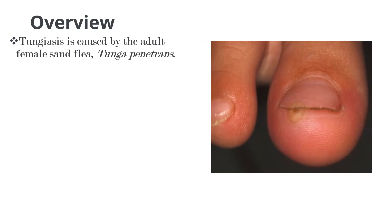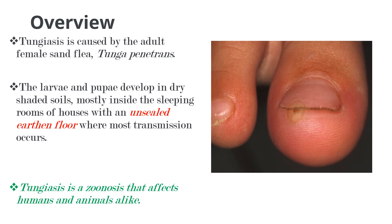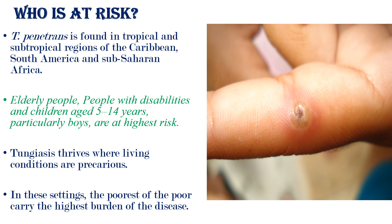Tungiasis is caused by the adult female sand flea, which is called Tunga penetrans. The larvae and the pupae develop in dry shaded soils, mostly inside the sleeping rooms of houses with an unsealed earthen floor, where most transmission occurs. Tungiasis is a zoonosis that affects humans and animals alike. Tunga penetrans is found in tropical and subtropical regions of the Caribbean, South America, and Sub-Saharan Africa.